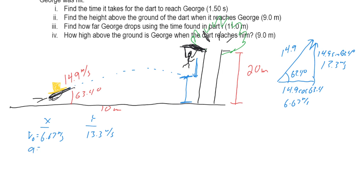Now let's note everything else we know. The acceleration in the x-direction is zero — no horizontal acceleration once the bullet is in the air. Vertically, the acceleration is −9.8 m/s². The horizontal displacement is 10 meters (the monkey is 10 meters away). We don't know the vertical displacement yet — that's what we're solving for. Time is the linking variable between both directions.